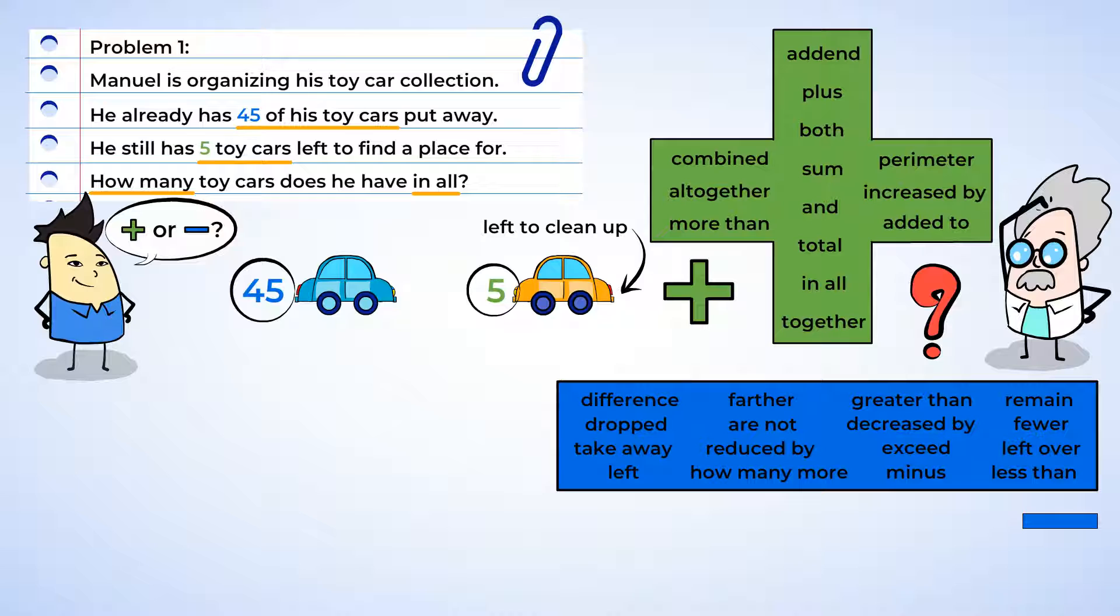Yes, I see in all. Altogether, or in all may mean the total for one step, or for the entire problem. Those words both mean putting things together, which is addition. That means 45 cars and 5 more cars.